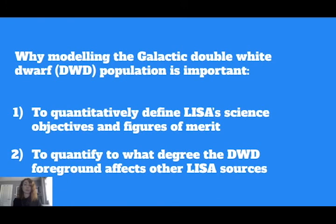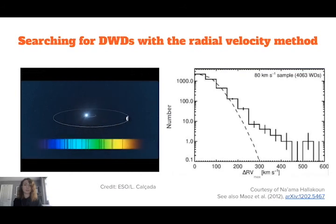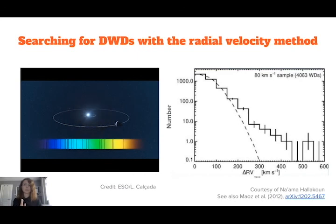Differently from our previous estimates based on binary population synthesis, here we use results obtained from observations. An efficient way of finding double white dwarfs is to look for radial velocity variations in large spectroscopic samples. If the white dwarf is in a binary system, following its spectrum over time reveals that its spectral lines move slightly back and forth as the white dwarf follows its orbit.